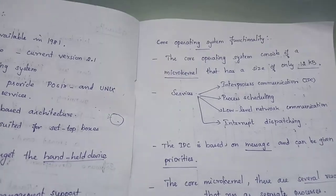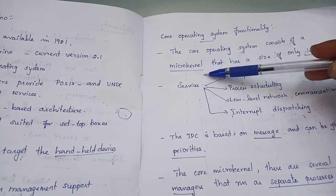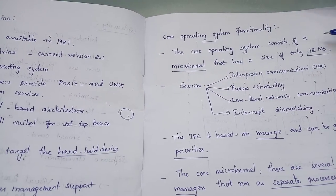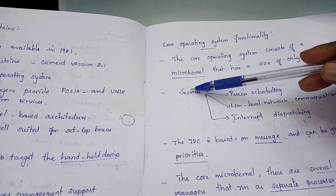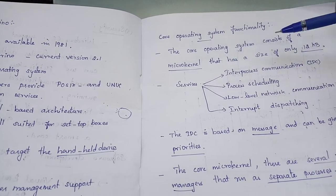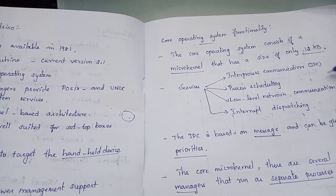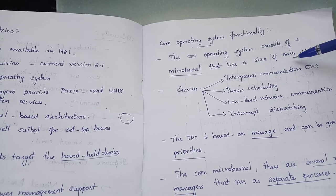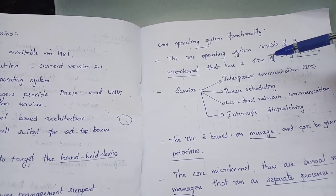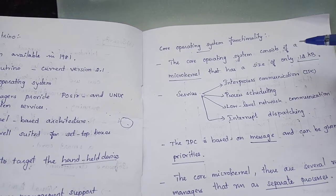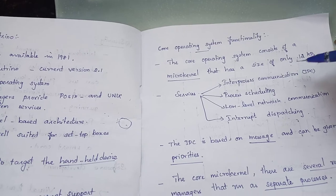The micro-kernel provides core operating system functionality. The micro-kernel size is only 12KB. It offers inter-process communication, and the operating system services are handled by resource managers.